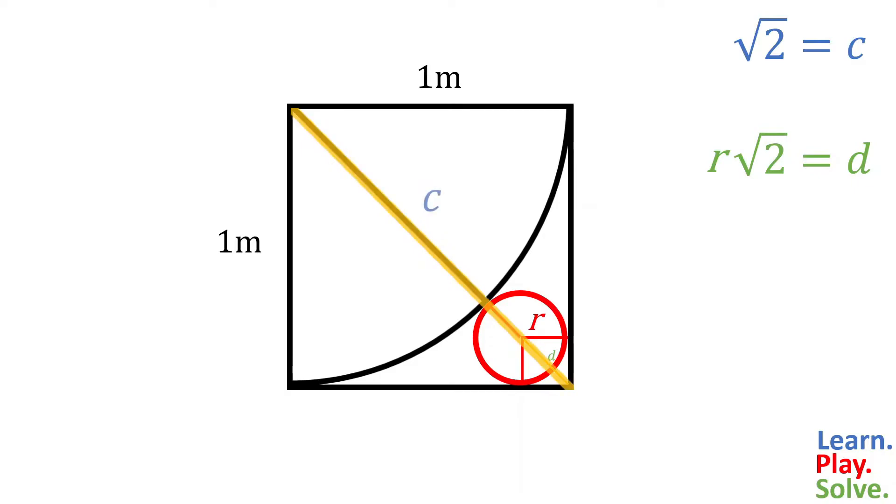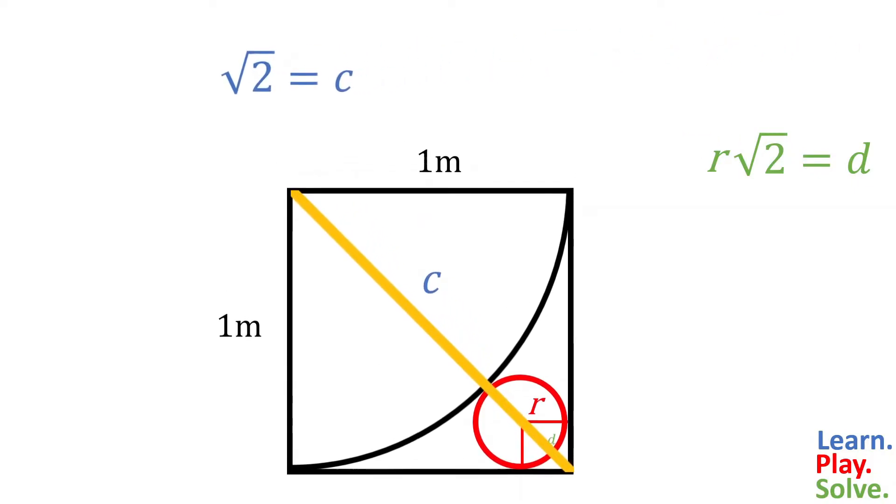And the main diagonal is the square root of 2, which is also the sum of its smaller parts. And they are the radius of the large tire, 1 meter, plus the radius of the small circle, r, plus the small diagonal, which we figured out was r times the square root of 2.